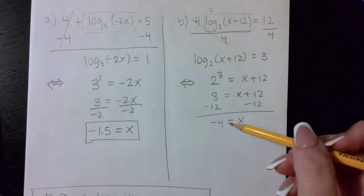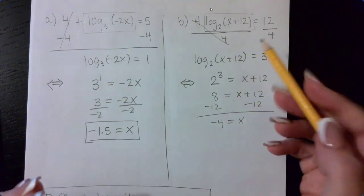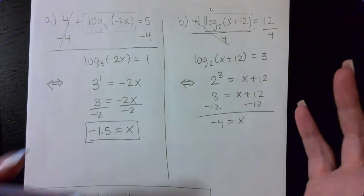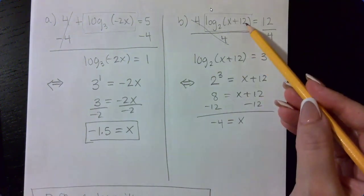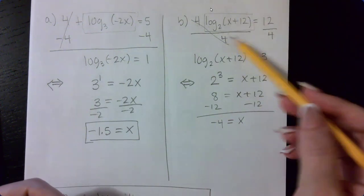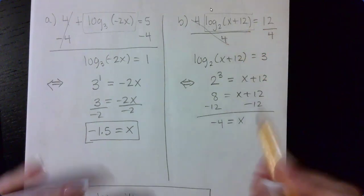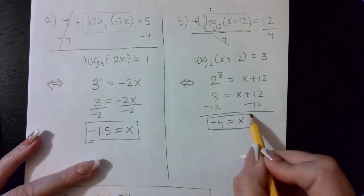So again, what you have to do is make sure that when this x value is plugged into the argument, that the argument is actually positive. So negative 4 plus 12 is actually a positive 8. So my argument is still positive, which means this is a valid answer.